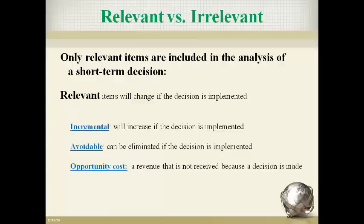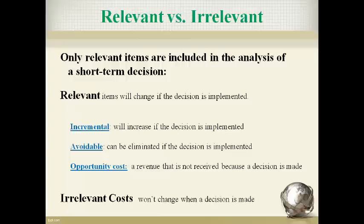An opportunity cost is also a relevant item. Opportunity costs are revenue that will not occur if the decision is made. Irrelevant costs will not change if the decision is implemented. Ignoring items and amounts that will not change simplifies the analysis. There is no need to include items in the analysis that will not change in total for the company if the decision is made.